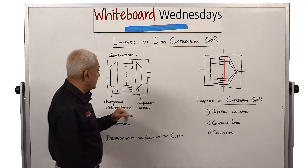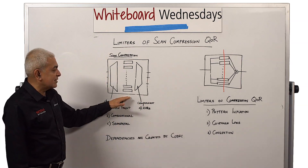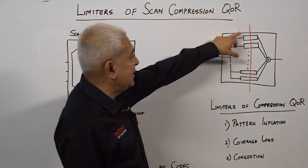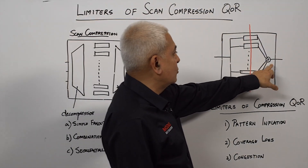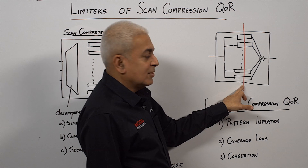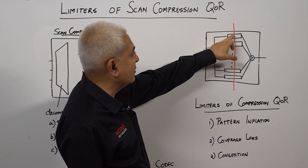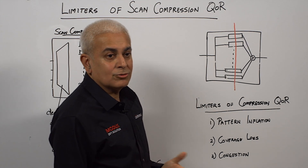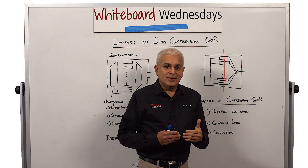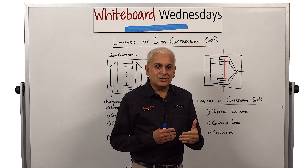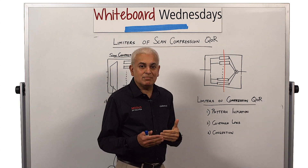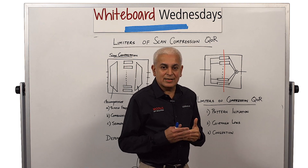Now let's talk about the limitations of scan compression. The best way to understand the limitations is to look at the problem in its extreme. Let us take one scan in, feed it to many scan chains, and then take it all to one scan out. The red line represents flops on the same shift position. Since this is the fan-out based implementation, all the flip-flops along this line will have the same value — and those are the dependencies. These dependencies come in the way of pattern compaction: when ATPG is generating tests for faults, it tries to compact as many patterns as possible into one test, and these dependencies prevent the ATPG compaction algorithms from being successful.